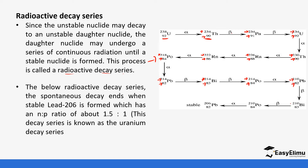A beta particle follows where the mass number remains the same but the atomic number increases by one. Then another beta particle is released — mass number stays the same, atomic number increases by one. Finally, an alpha particle is released where the mass number decreases by four and the atomic number decreases by two. This is a continuous reaction.